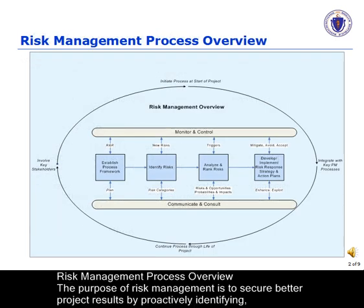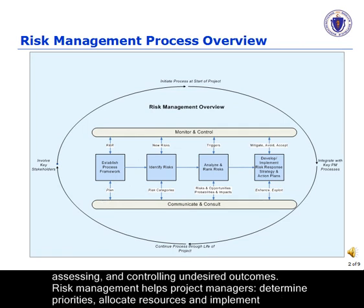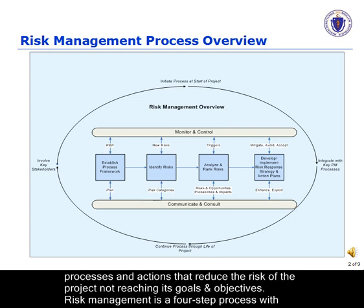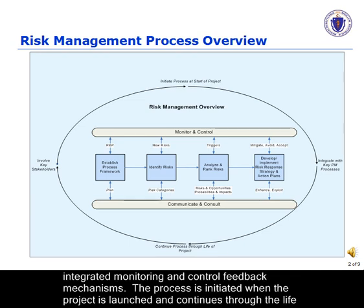Risk Management Process Overview. The purpose of risk management is to secure better project results by proactively identifying, assessing, and controlling undesired outcomes. Risk management helps project managers determine priorities, allocate resources, and implement processes and actions that reduce the risk of the project not reaching its goals and objectives. Risk management is a four-step process with integrated monitoring and control feedback mechanisms.